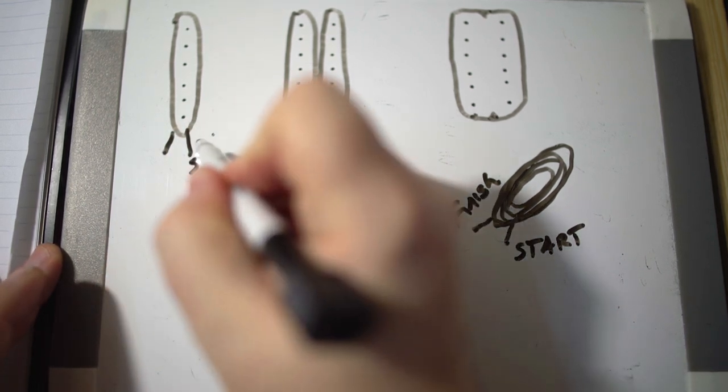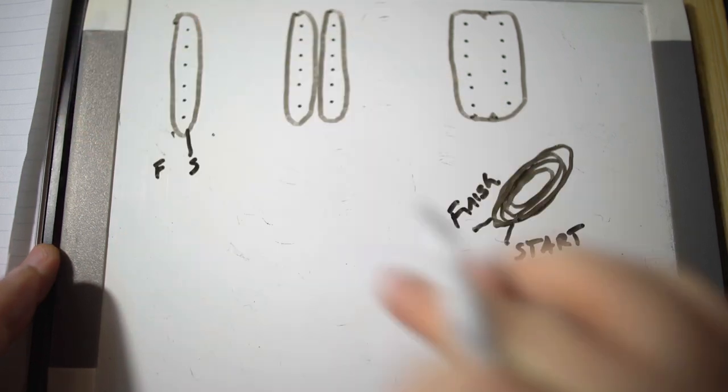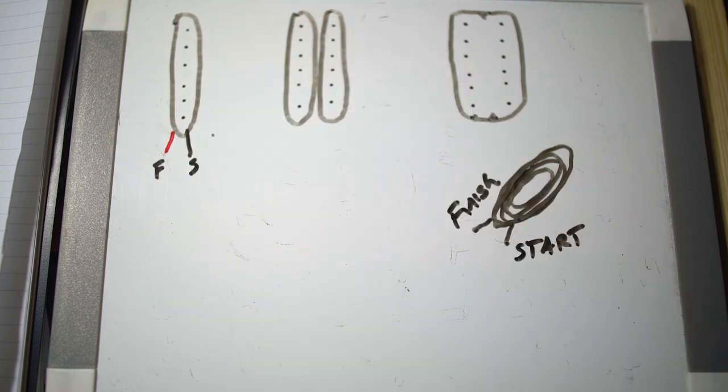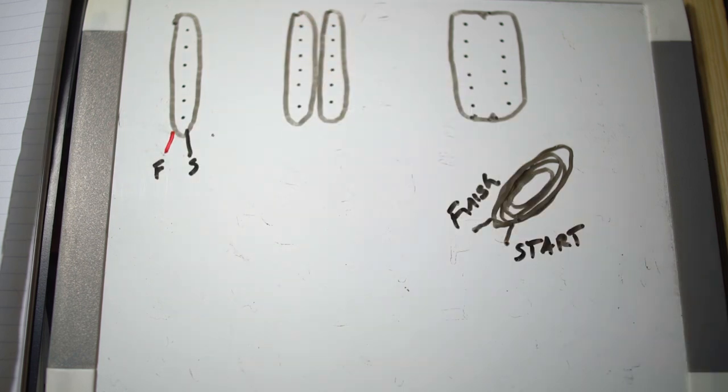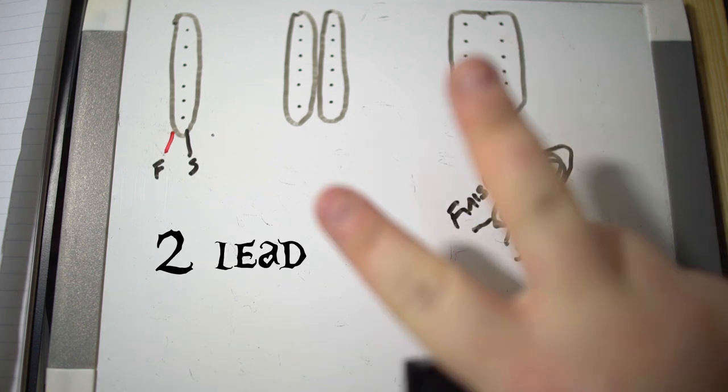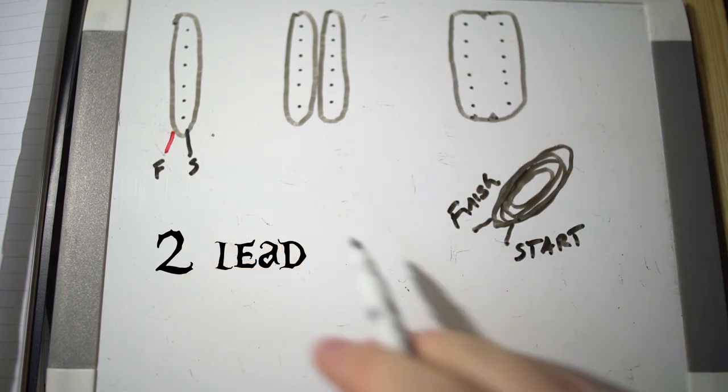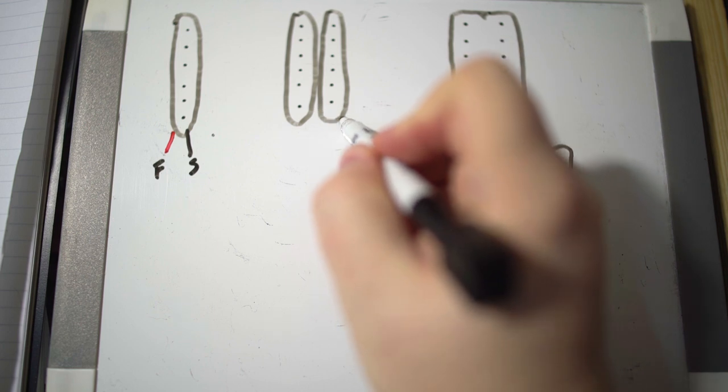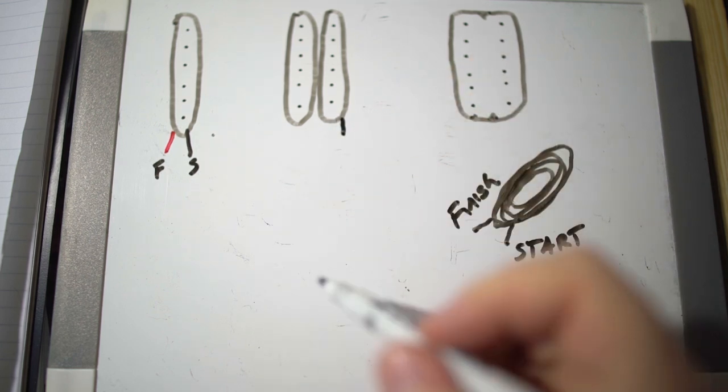If you're dealing with a two-pole pickup like a single coil, then that's all you're going to have is a start and a finish for the most part. You're going to have your start and your finish, which is also basically your ground and your hot lead. Let's make our hot leads red just for a little bit of added clarity.